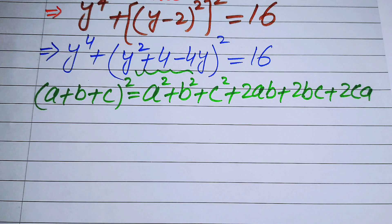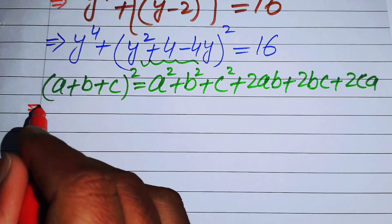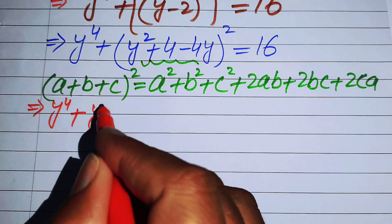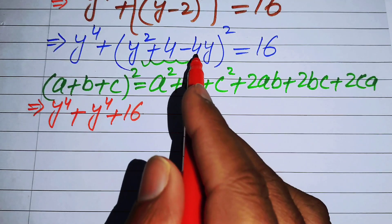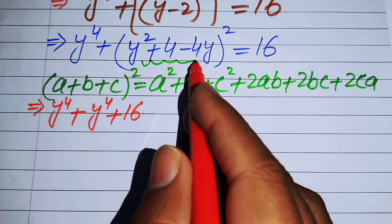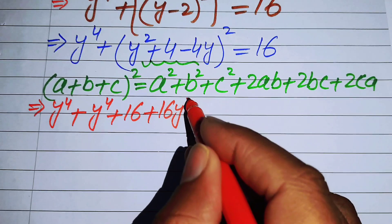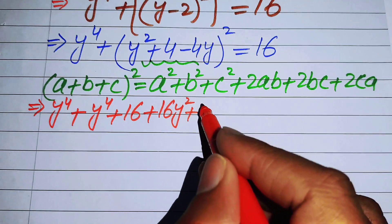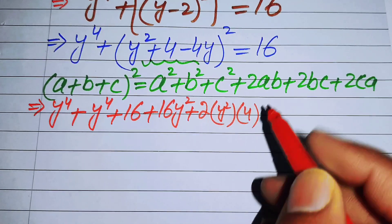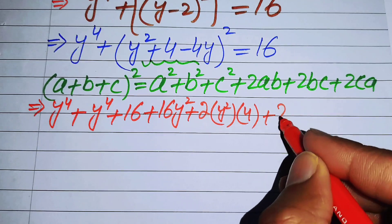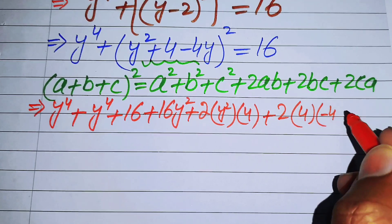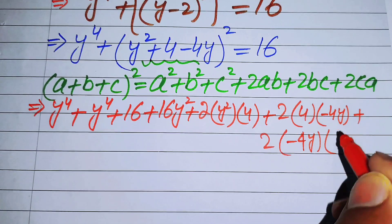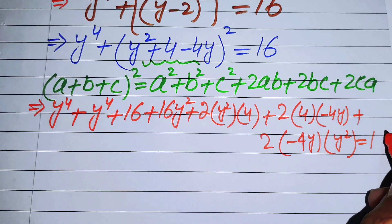Expanding, we get y^4 plus: y^4 + 16 + 16y^2 (from squaring each term), then 2 times y^2 times 4, plus 2 times 4 times (-4y), plus 2 times (-4y) times y^2. This whole expression equals 16.